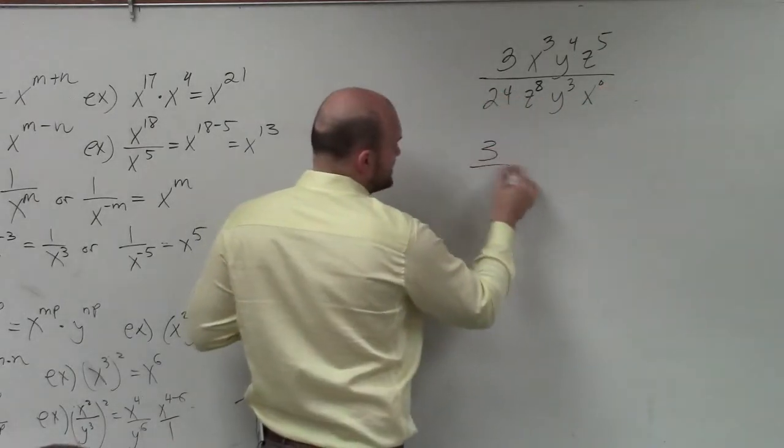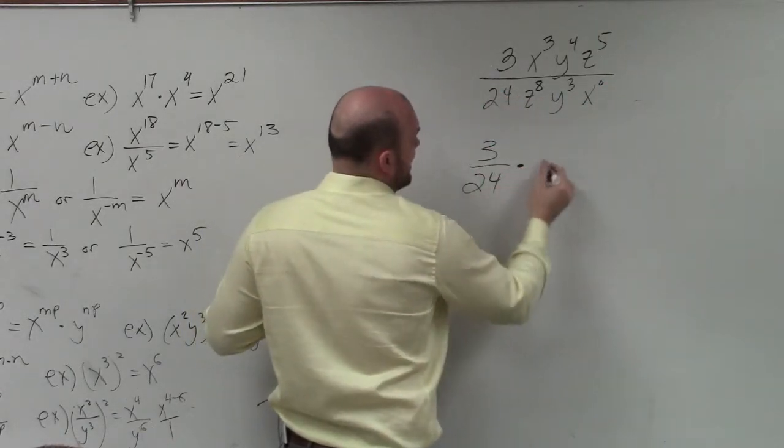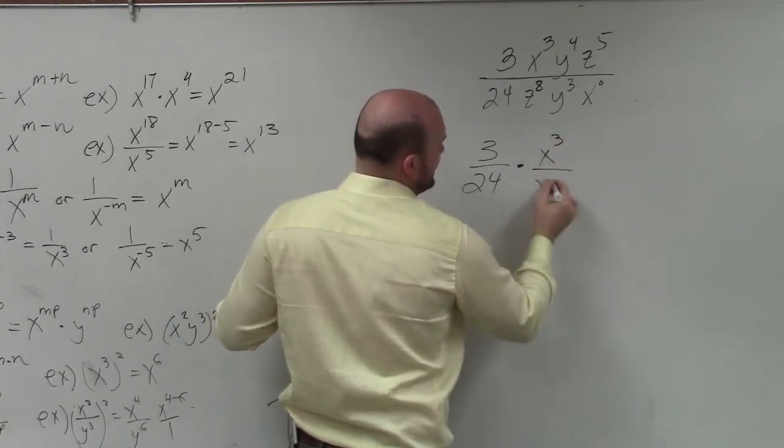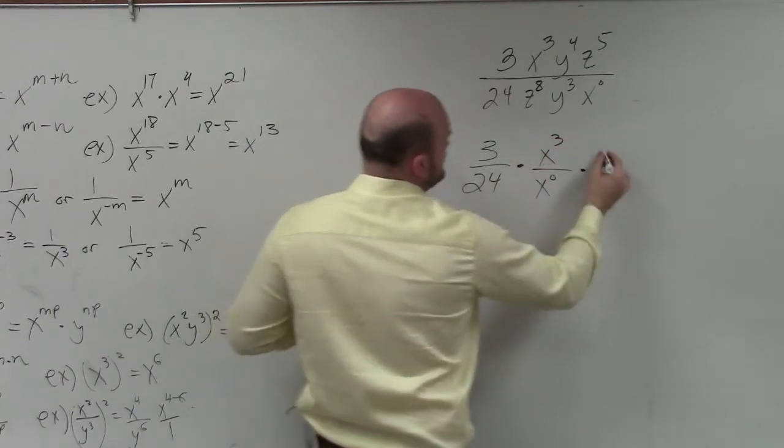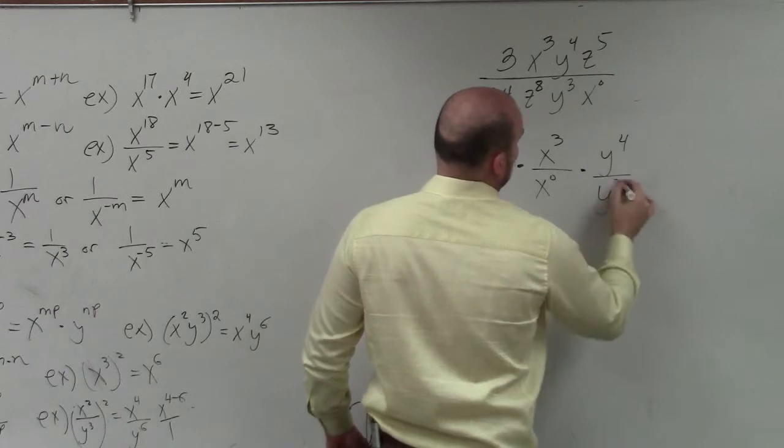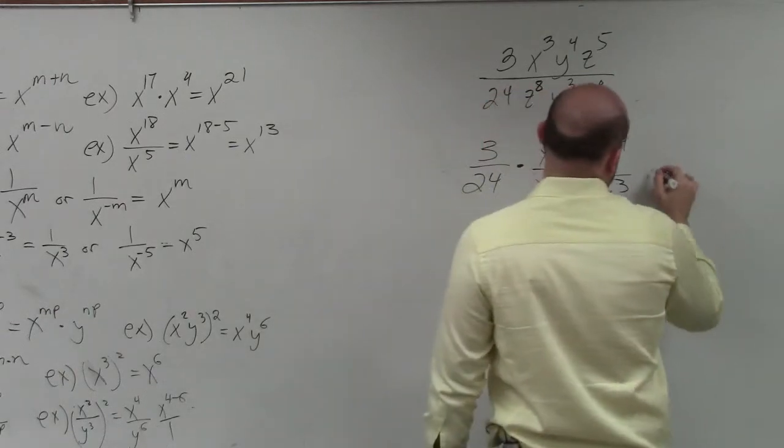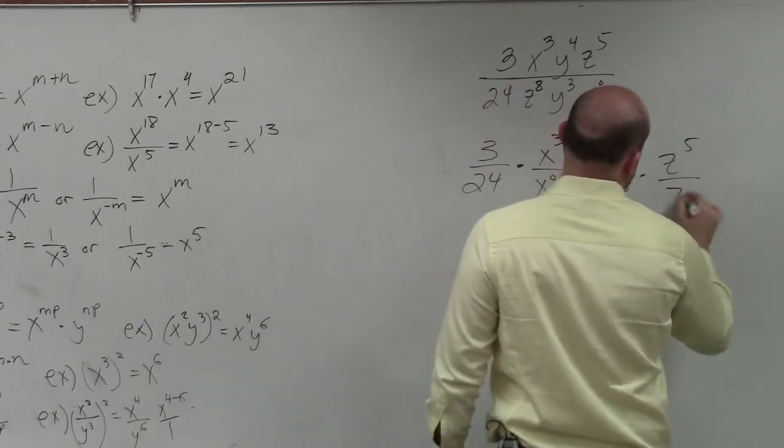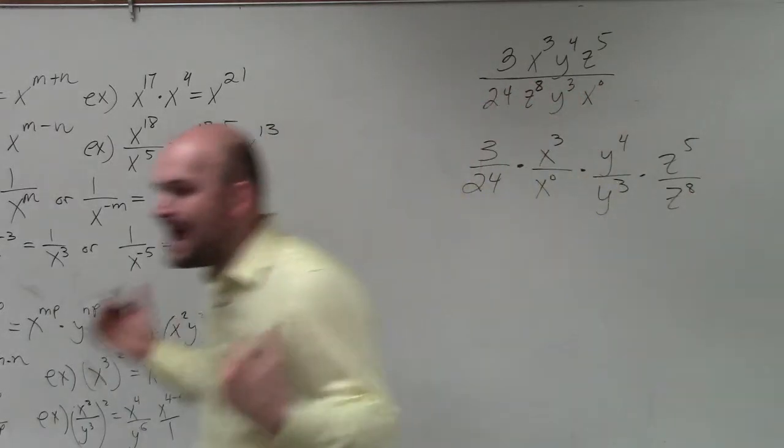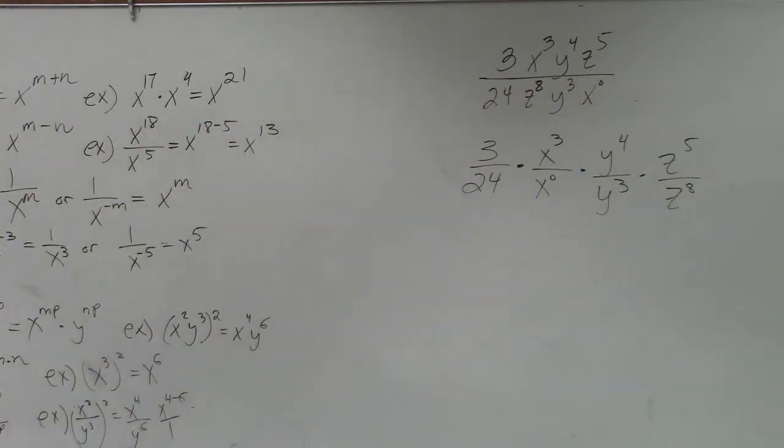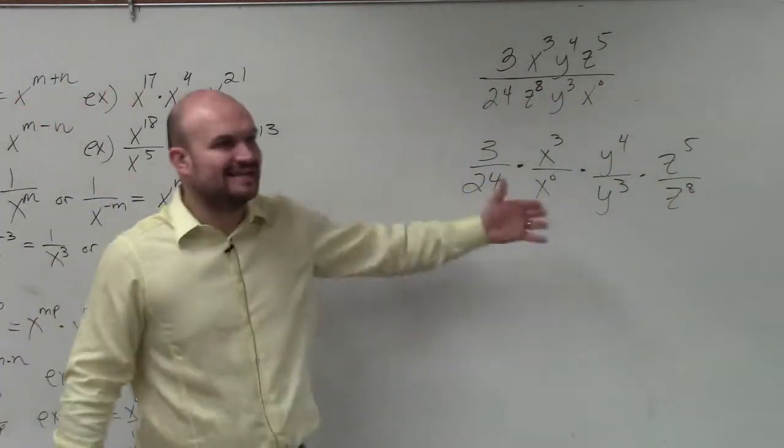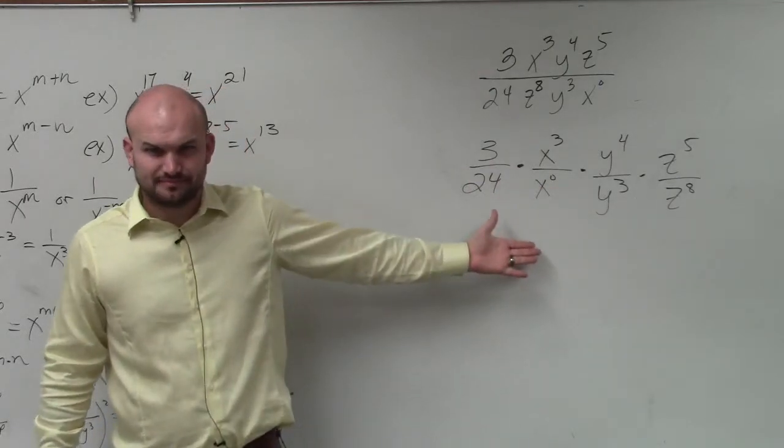Therefore, I'm going to break this apart as 3 over 24 times x cubed over x to the zero times y to the fourth over y cubed, and then times z to the fifth over z to the eighth. All right, you don't have to break them apart, but I like to break them apart so I can just do each one individually. Does that make sense? Yes. All right.